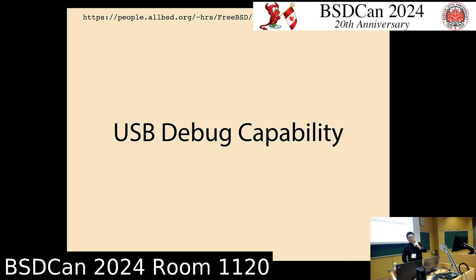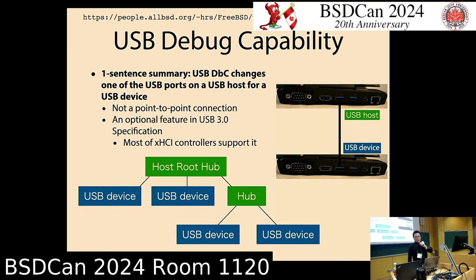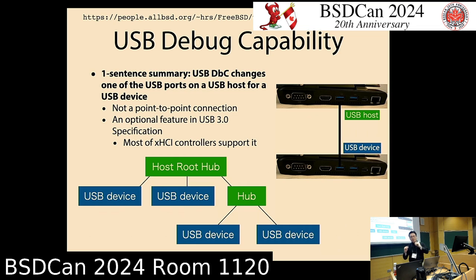The USB debug capability is something that makes direct connection possible. In one sentence: if the USB debug capability is enabled on your machine, one of your USB ports will act as a USB device. There is no need for additional hardware if you have a USB 3.0 host controller.